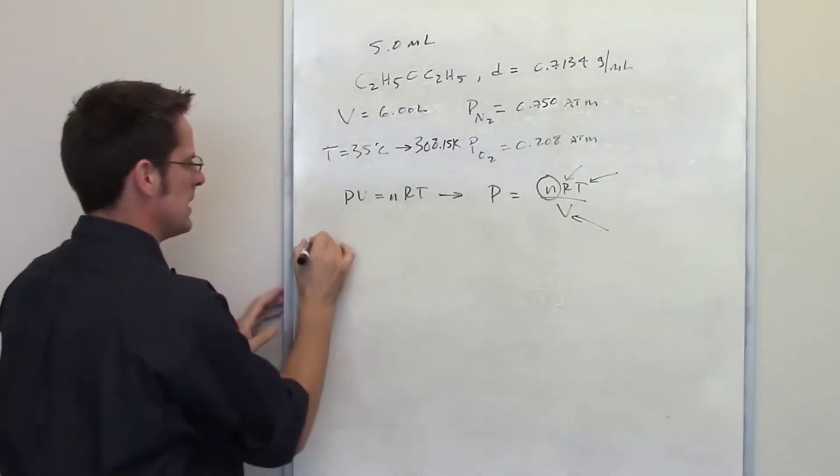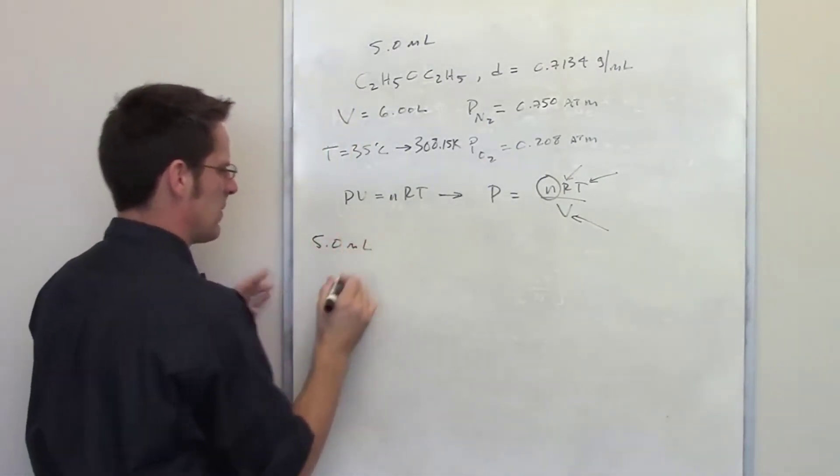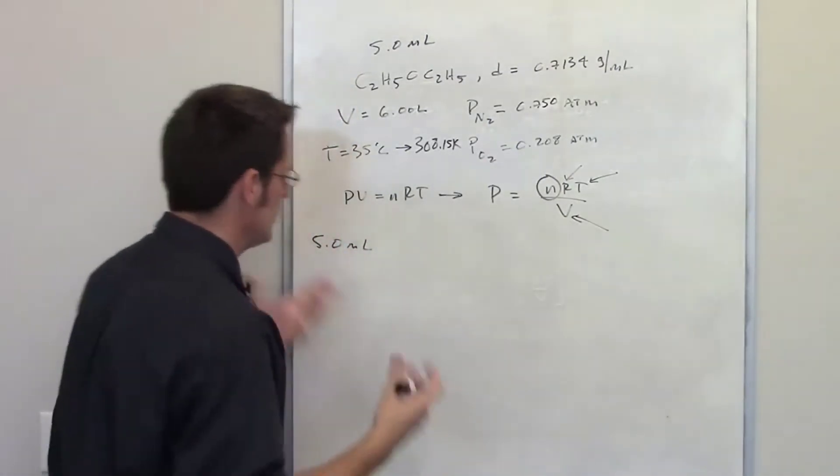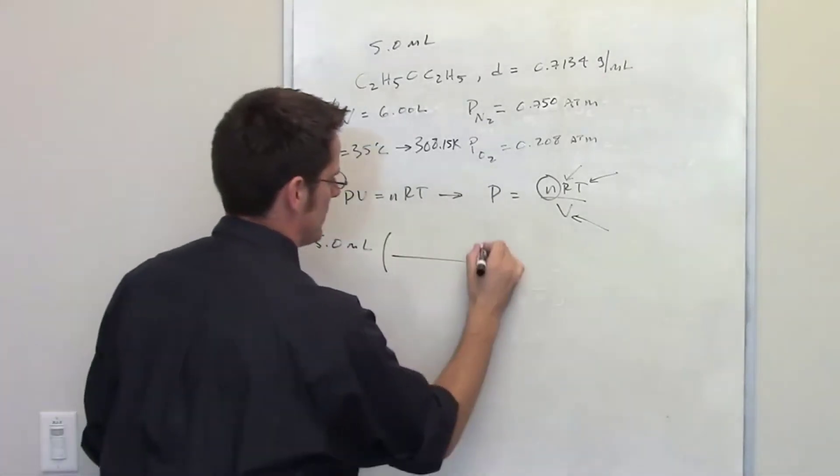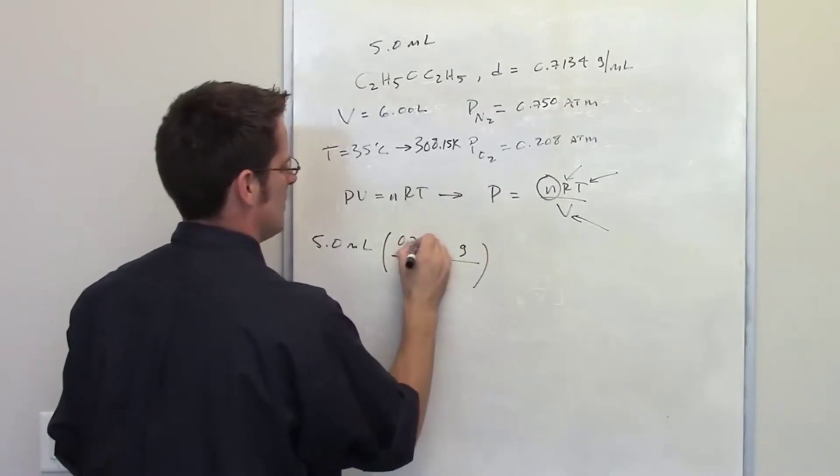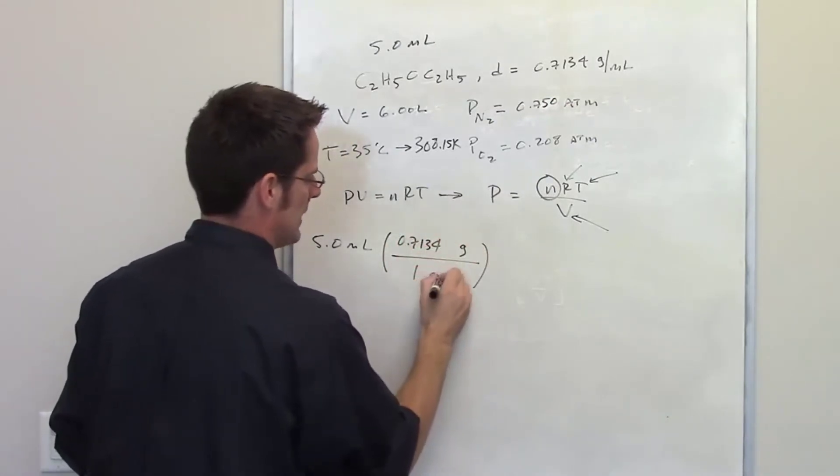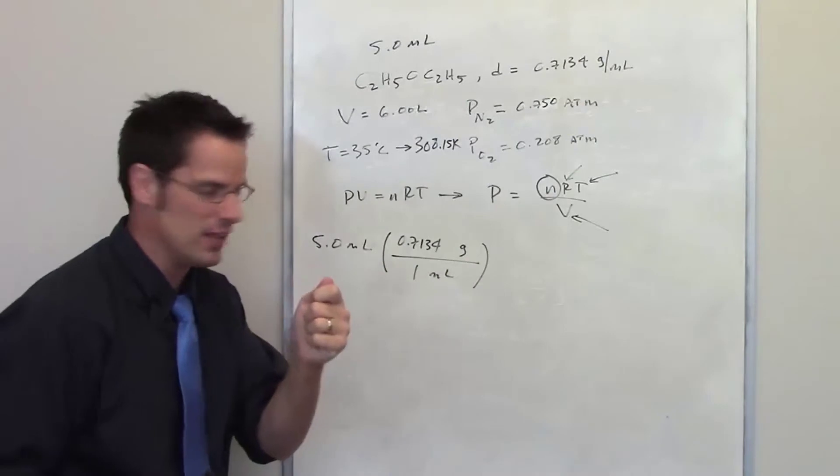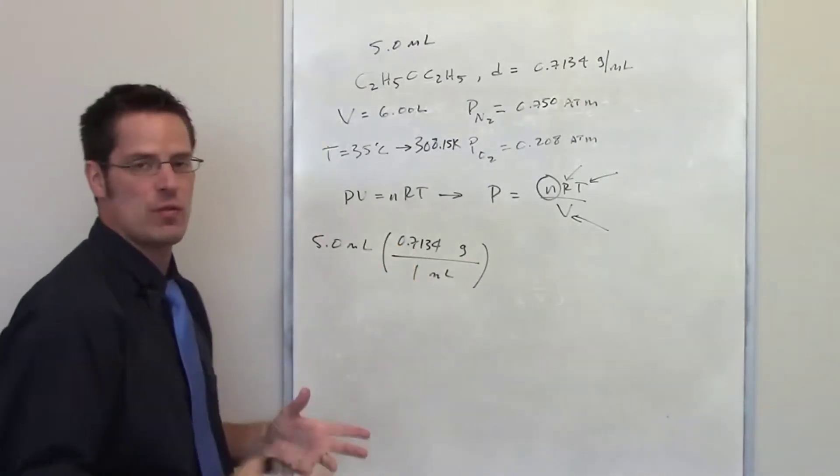We're told that we have five milliliters of diethyl ether. Can we somehow convert that into moles? Well yeah we're going to do some dimensional analysis. We're also told that diethyl ether has a density of 0.7134 grams per milliliter which means that if I have one milliliter of this it weighs 0.7134 grams.